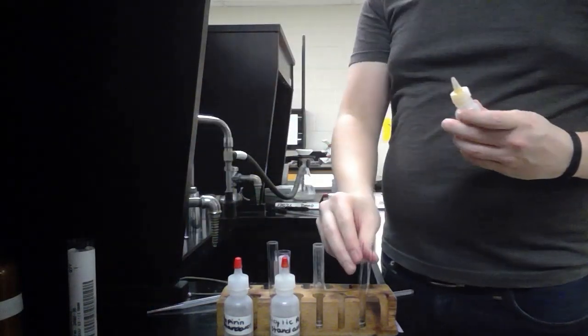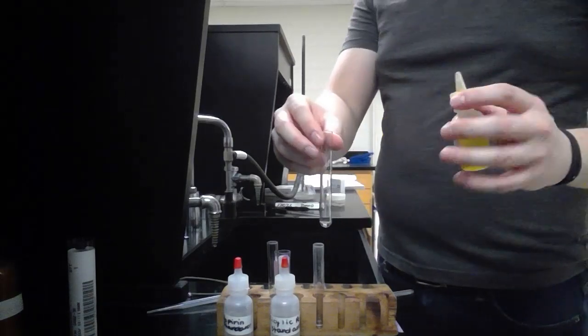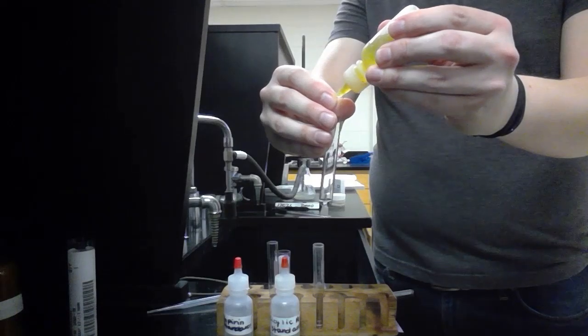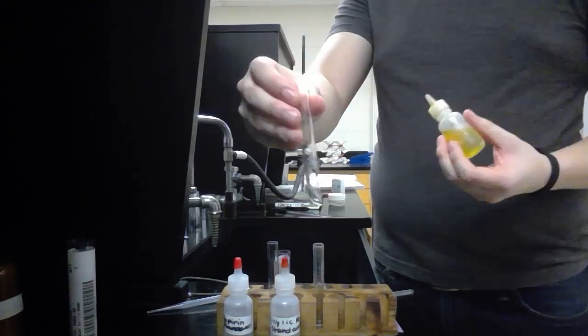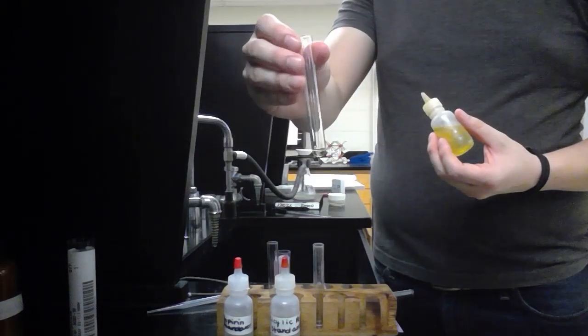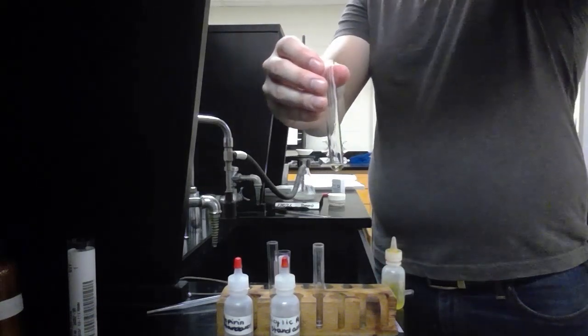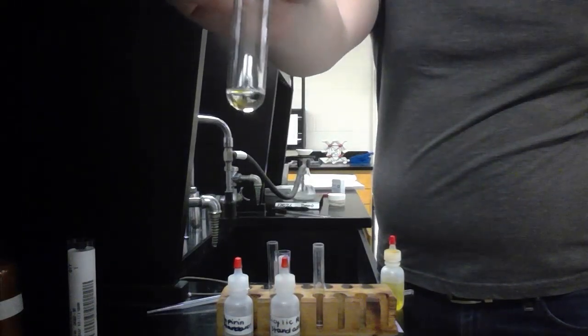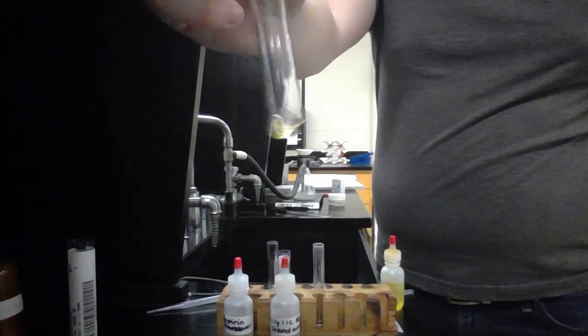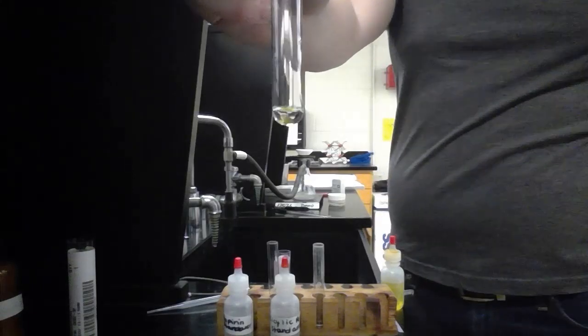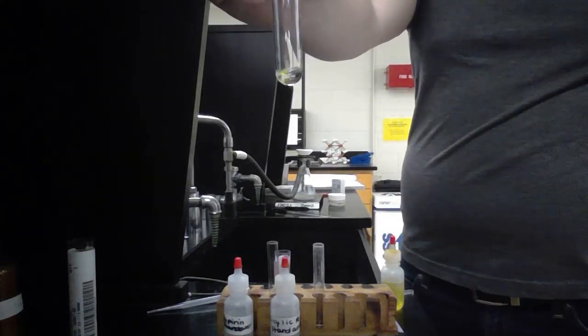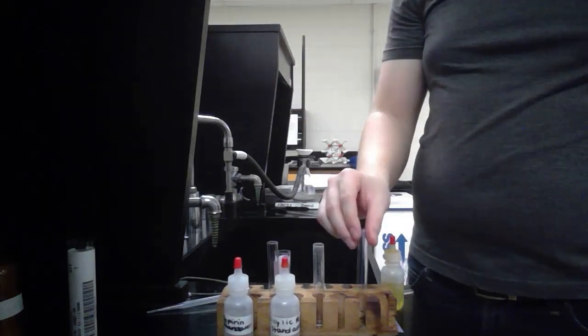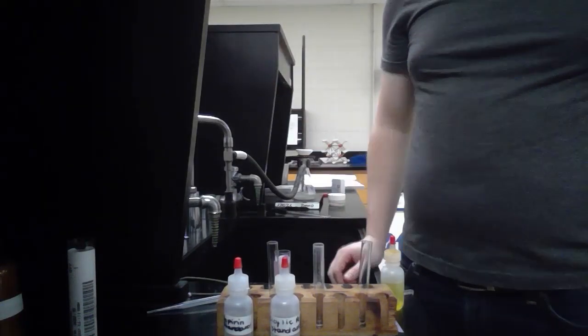The next test that we'll do is the ferric chloride test. We're just going to add one drop of that in with our made aspirin and look for a color change. A positive test would show a blue or purple. Here we can see that there is no color change, so we have a negative result. This only reacts if there is a phenol present and if there is leftover salicylic acid, since that is a phenol. So that one is a negative result.